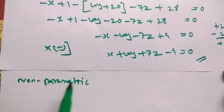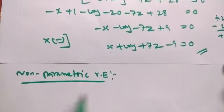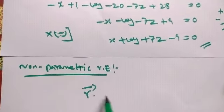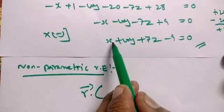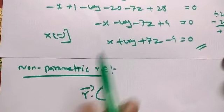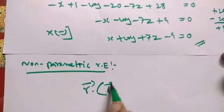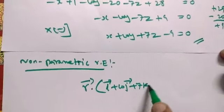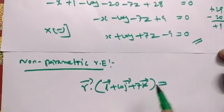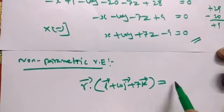This is the non-parametric vector equation. So r · n will be 1 into i, i + 10 into j, 10j + 7 into k, 7k equal to the constant 9.